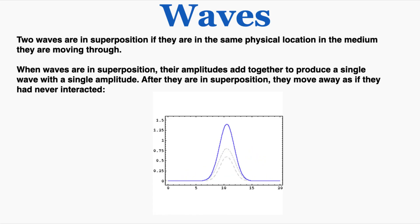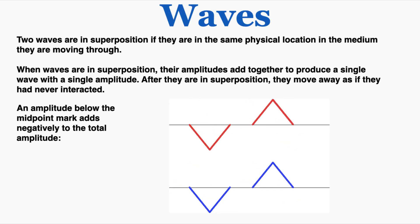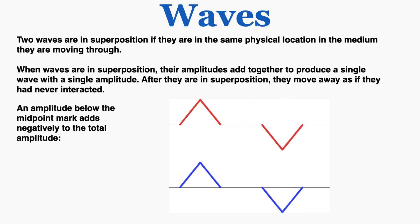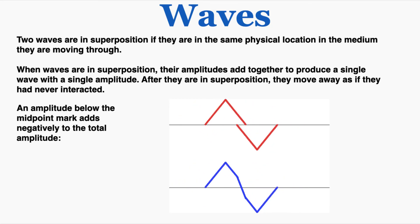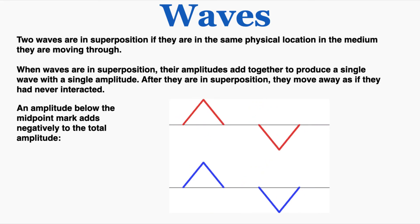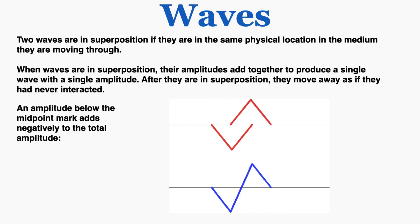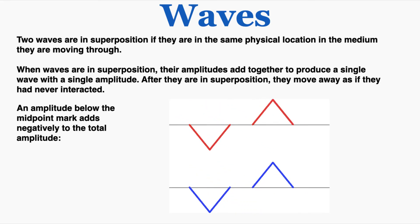The two waves are literally superimposed on the same position. If a wave has an amplitude below the midpoint mark, that amplitude adds negatively to the total amplitude. So if I allow these two red waves to move through each other, the blue wave on the bottom shows what the superposition of the two waves would look like.